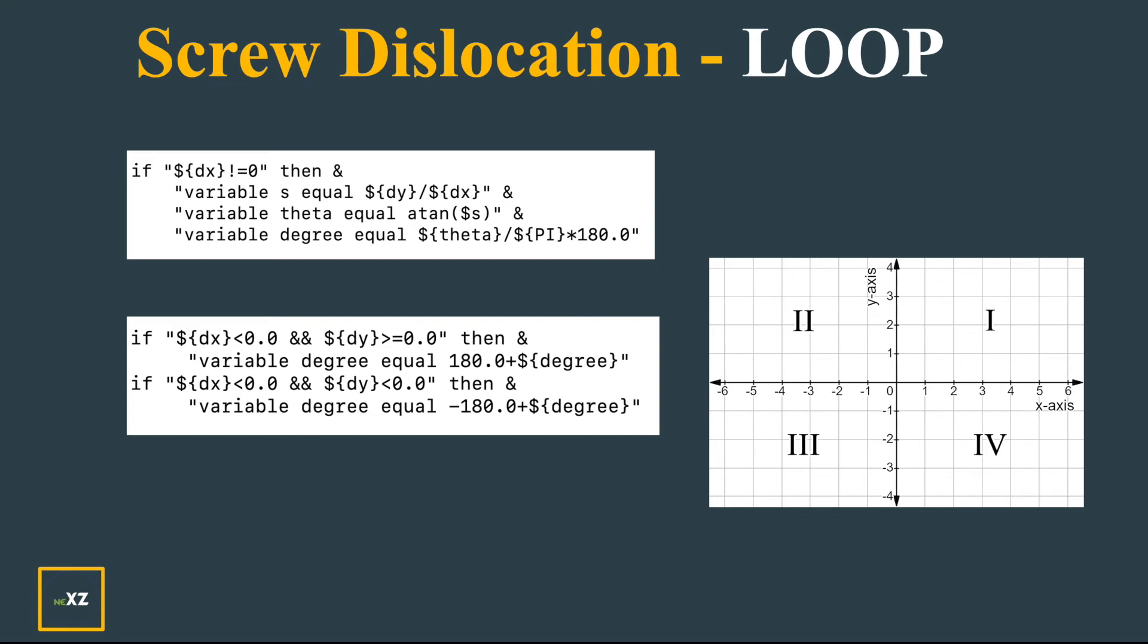Now if denominator is not 0, you can use normal formula. I give s as y by x, and theta is tan inverse y by x. And degree is theta times 180 divided by π, so I can get the value in degrees, not radians.